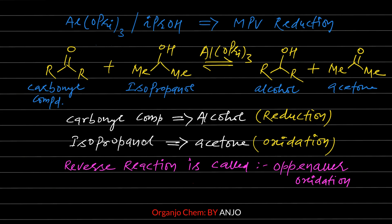To summarize: when any carbonyl compound reacts with isopropanol in the presence of aluminum isopropoxide, the carbonyl compound is converted to the corresponding alcohol, and isopropanol is converted to acetone. Since the carbonyl compound converts to alcohol, its hydrogen content increases, so it undergoes reduction. Similarly, isopropanol converts to acetone with decreased hydrogen content, so it undergoes oxidation.